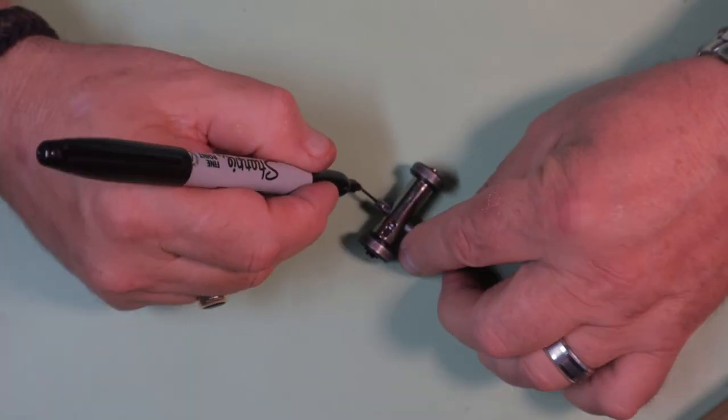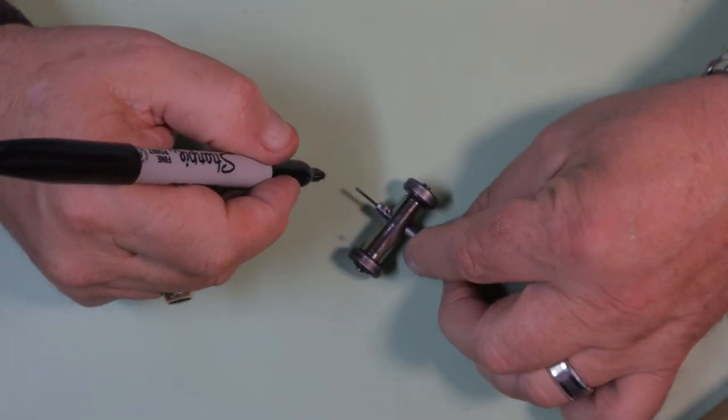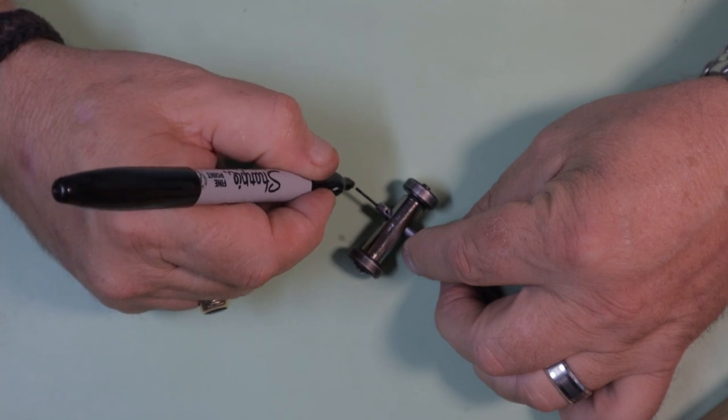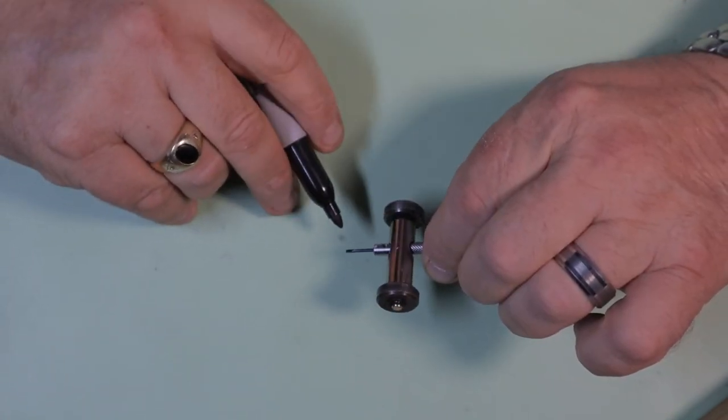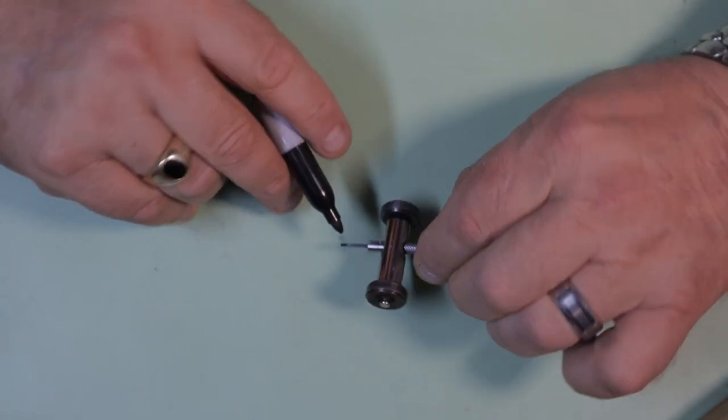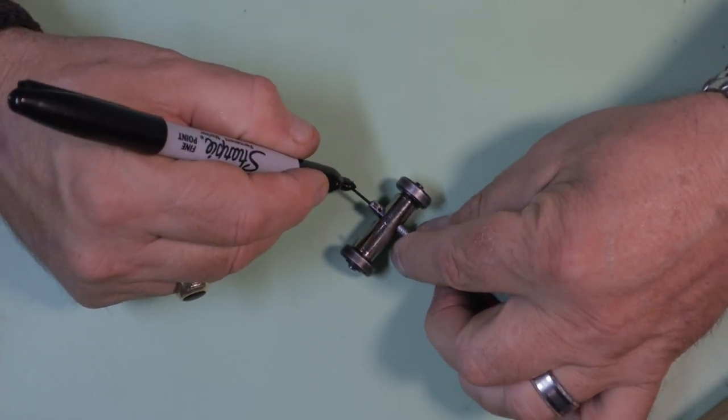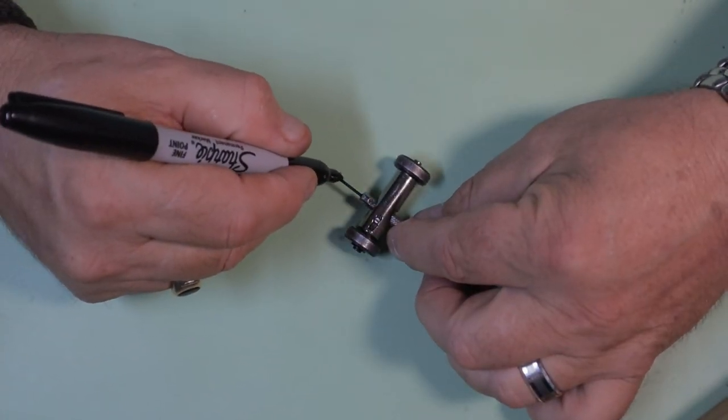Now if this is your first time I'd probably recommend taking a sharpie and just marking both sides of the blade with the black ink. That way as you're sharpening it you can check the angle to make sure that it's sitting flat so you're not over sharpening the blade.